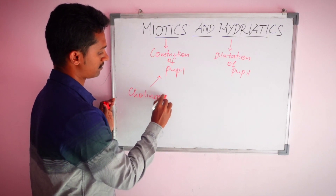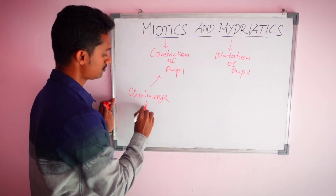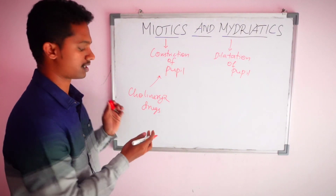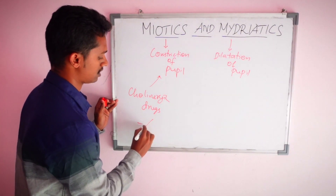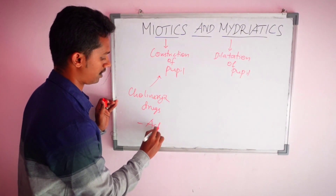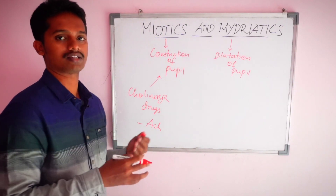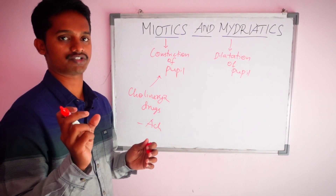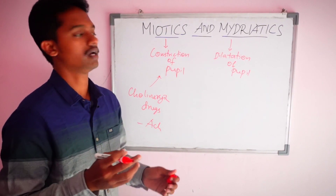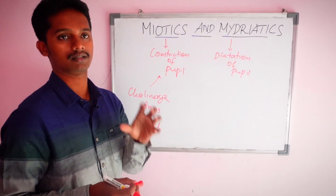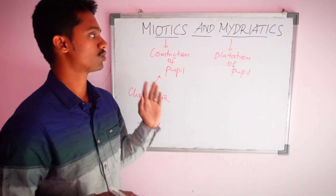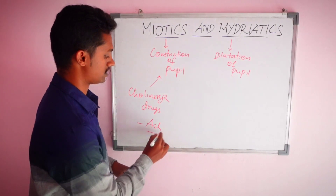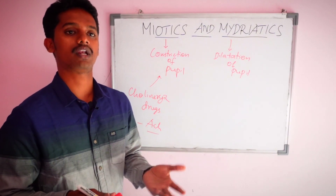These are cholinergic drugs. Natural neurotransmitter drugs include acetylcholine. Acetylcholine acting on the pupil will cause it to constrict — this is called miosis. So miosis is naturally produced by acetylcholine, which is the natural cholinergic neurotransmitter.